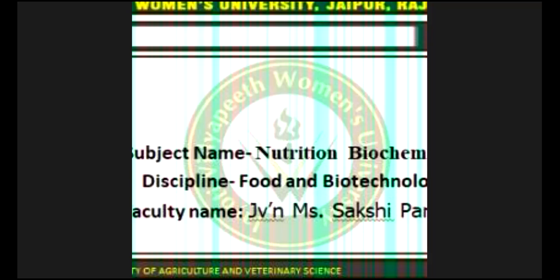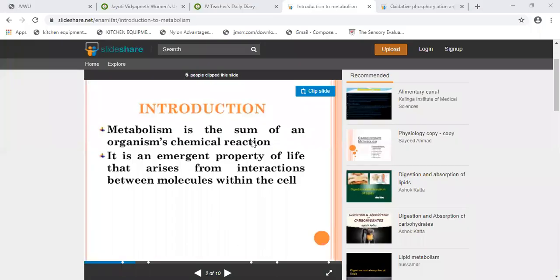Catabolism and anabolism both come under the metabolism processes. So, what is metabolism? It is the sum of an organism's chemical reactions. It is an emergent property of life, and it arises from the interaction between the molecules within the cell. Metabolism happens through chemical reactions occurring within the cell.